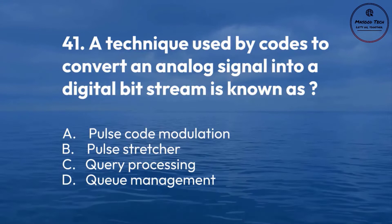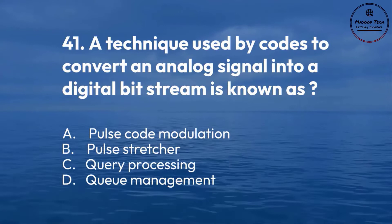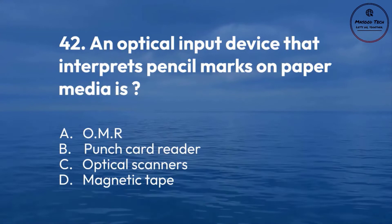Number 42. An optical input device that interprets pencil marks on paper media is: A. OMR. B. Punch card reader. C. Optical scanners. D. Magnetic tape. Correct answer is A.